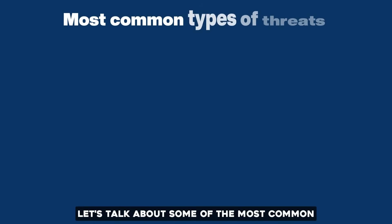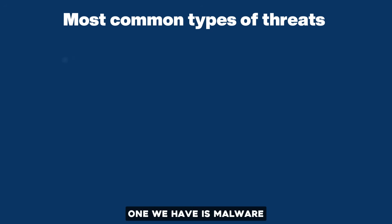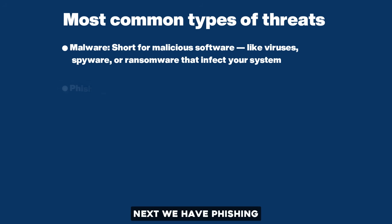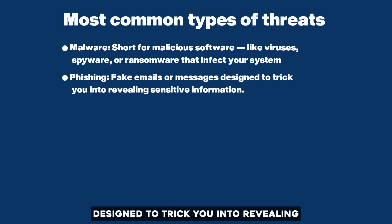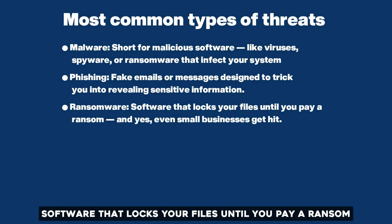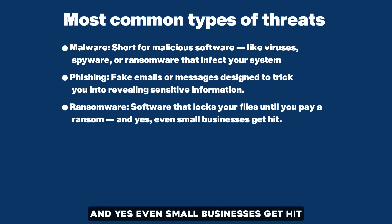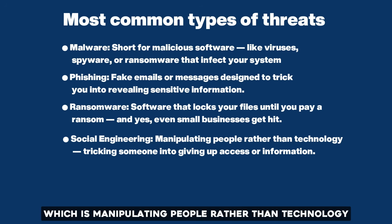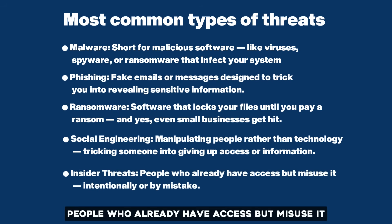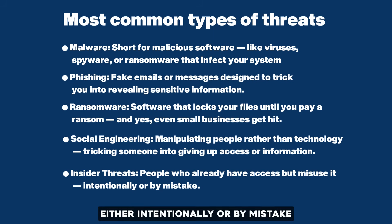Let's talk about some of the most common types of threats you'll encounter. First, malware — short for malicious software — like viruses, spyware, or ransomware that infect your system. Next, phishing: fake emails or messages designed to trick you into revealing sensitive information. Then ransomware, software that locks your files until you pay a ransom — and yes, even small businesses get hit. Next, social engineering, which is manipulating people rather than technology, tricking someone into giving up access or information. And finally, insider threats: people who already have access but misuse it, either intentionally or by mistake.